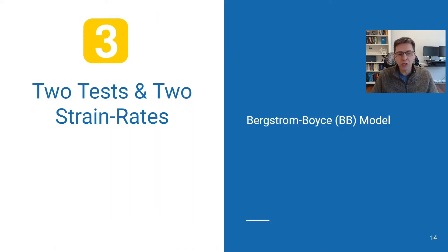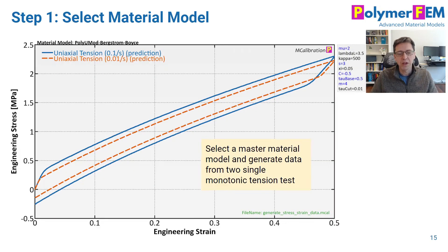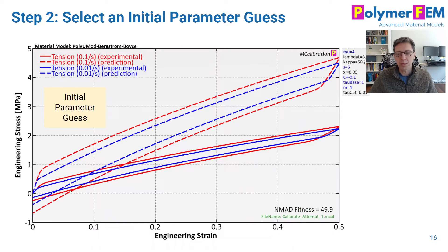But how about if we do two tests at two strain rates? Well, that's what a lot of people typically do. So let's try that next. Here's the strategy, same as before. I generate stress-strain predictions with the same material model at two strain rates, 0.01 and 0.1 per second. And then I perturb my parameters just like before. Here's the initial guess.